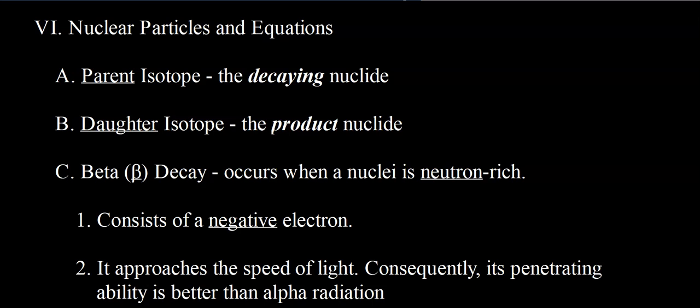Beta particles are able to travel very fast, approaching the speed of light, and consequently they're somewhat dangerous to us. When we talk about the dangers of different types of radiation, we often discuss penetrating ability — what types of materials they can pass through. Beta particles can easily pass through a sheet of paper. What blocks beta particles would be a thin piece of metal foil, like aluminum foil. Beta particles can definitely penetrate through our skin, get into our bodies, and cause all kinds of problems.